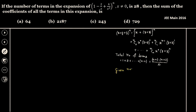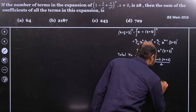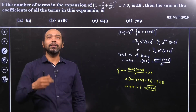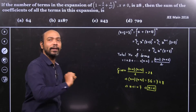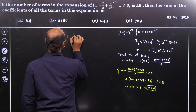For this given expansion, the number of terms is 28. So n plus 1 times n plus 2 divided by 2 equals 28, which implies n plus 1 times n plus 2 equals 56. Since n plus 1 and n plus 2 are two consecutive numbers, and 56 equals 7 times 8, we get n plus 1 equals 7, so n equals 6. Now let's concentrate on finding the sum of the coefficients.